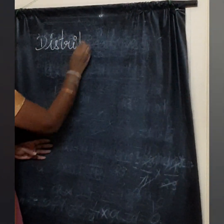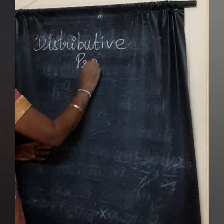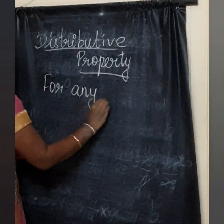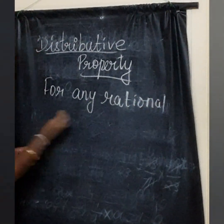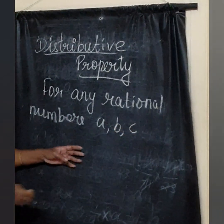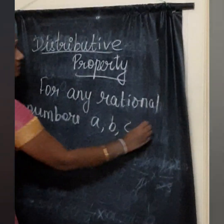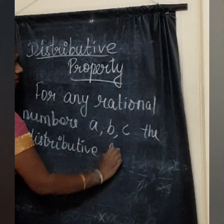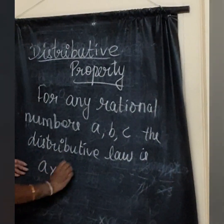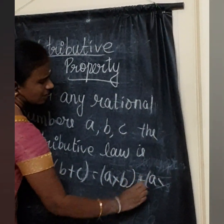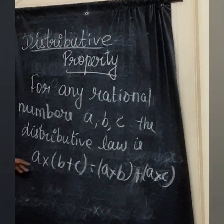The next and last property is the distributive property. For any rational numbers A, B, C, the distributive law states: A into B plus C is equal to A into B plus A into C.